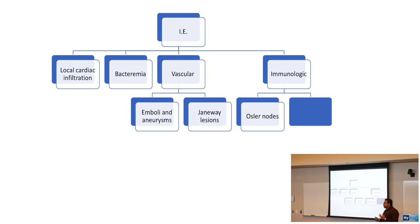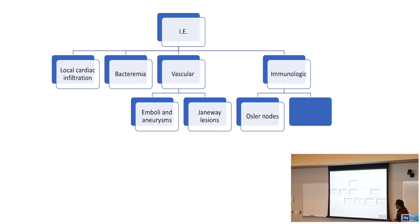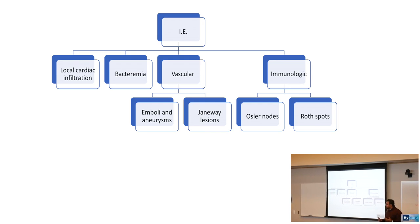Osler's nodes are painful nodes on the palms — an immunological phenomenon, remembered by 'ouch, Osler.' Roth spots are going to be found in the eye.